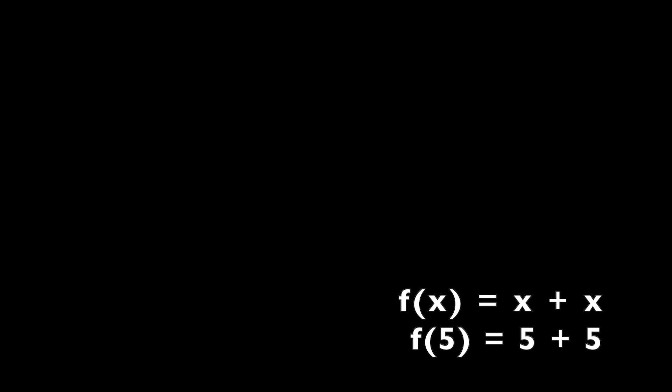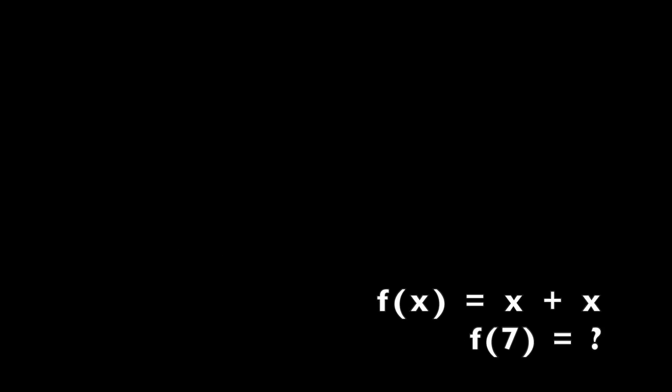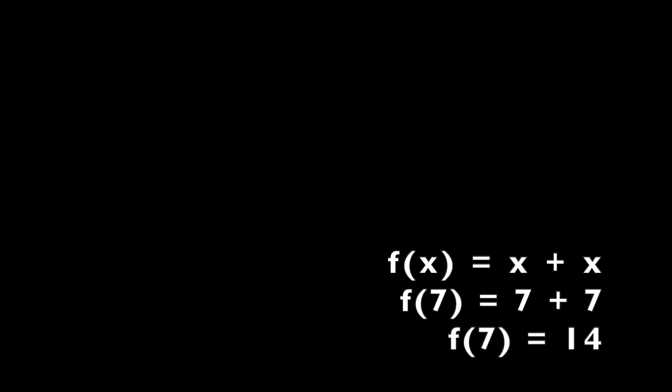Let's take a look at an example. Let's say you have the equation f(x) = x + x. If I do f(5), I replace x with the value 5, so now it's 5 + 5, and f(5) equals 10. If instead it was f(7), it would be 7 + 7 because x has the value 7, and f(7) would equal 14.